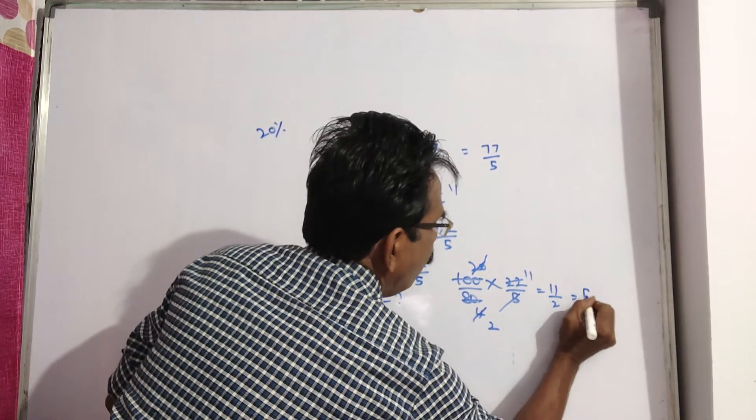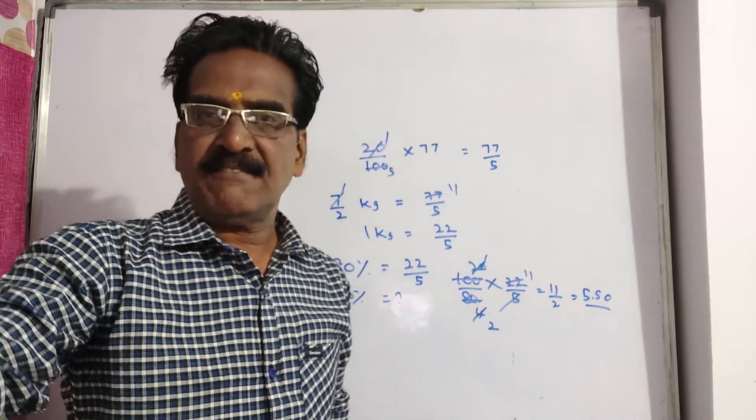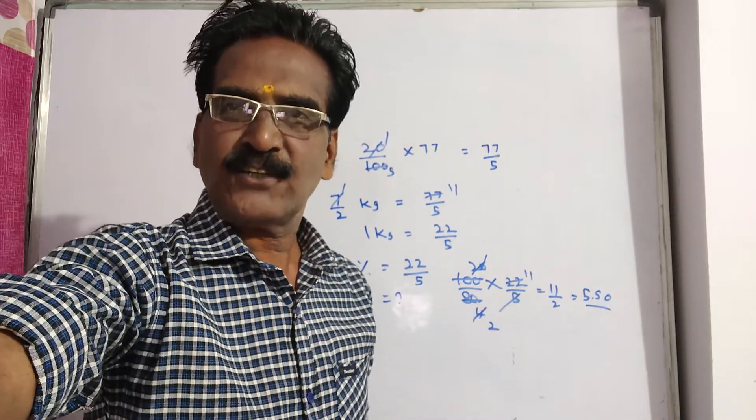11 by 2 or 5 rupees 50 paise. 5 rupees 50 paise was the original price. That is the price before reduction. Okay friends, thank you. Have a nice day.